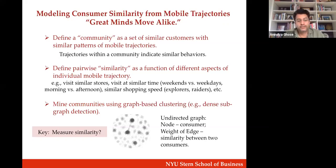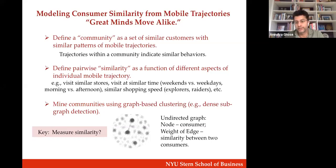Are you visiting similar stores or different stores? Are you visiting at a similar time — weekend or weekday, morning, evening, afternoon, or night? Do you have similar shopping speed? Your walking speed is indicative of whether you're a focus shopper or an explorer. We take all of this data and rely on graph-based clustering — specifically dense subgraph detection — to figure out which two customers are similar to each other.